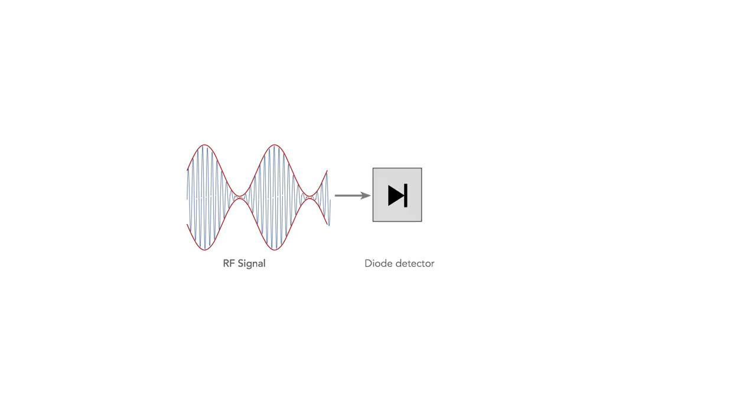The diode only passes current in one direction. It rectifies it so only one half of the signal appears at the output. Next the high frequency elements of the signal are filtered out so that only the required audio remains.